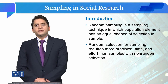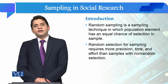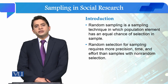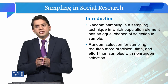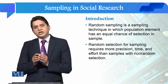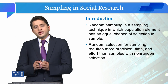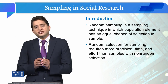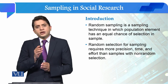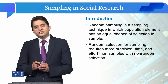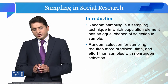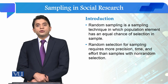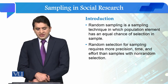Probability sampling is a type of sampling in which the respondents have equal chances of selection in a sample from the population. The sample elements drawn from the population have equal chances of selection into the sample.